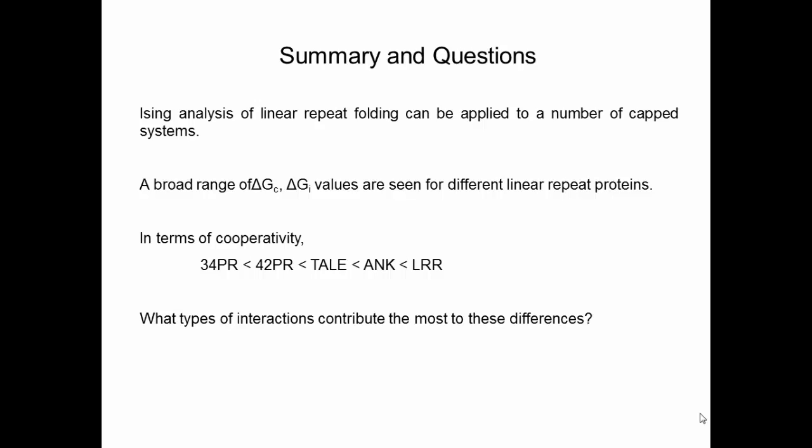In summary, we've learned that a simple nearest-neighbor energy model or Ising analysis can be applied to these capped linear repeat proteins, and we can quantify free energies of coupling and intrinsic free energies, seeing a broad range of these for different proteins. Cooperativity is greatest for leucine-rich repeat proteins, also fairly high but not as high for ankyrin repeat proteins, and decreased for TPR proteins, both 34 and 42 residue TPRs. A key question we want to address next is what kinds of interactions contribute to these differences in cooperativity — whether it is buried surface, polar interactions, or charged interactions.